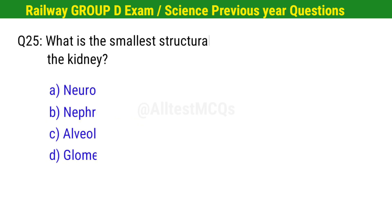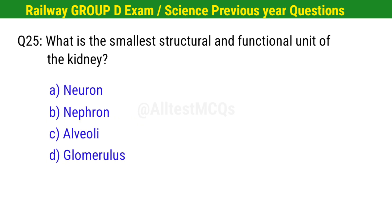Question No. 25. What is the smallest structural and functional unit of the kidney? Correct option is B. Nephron.